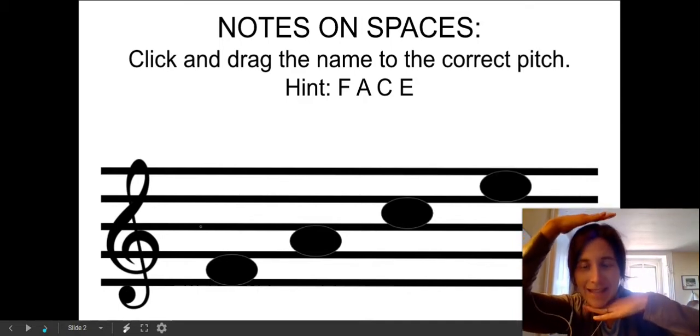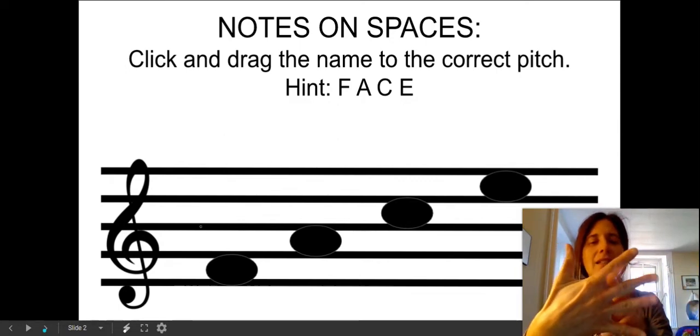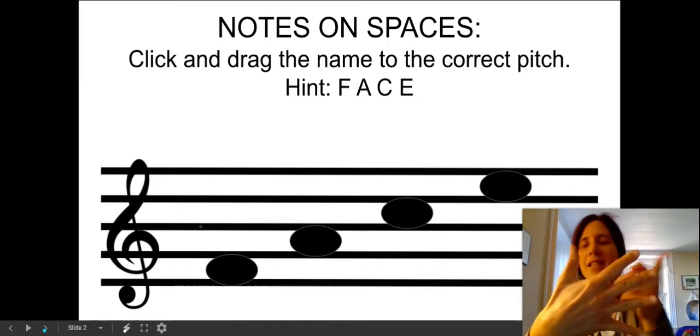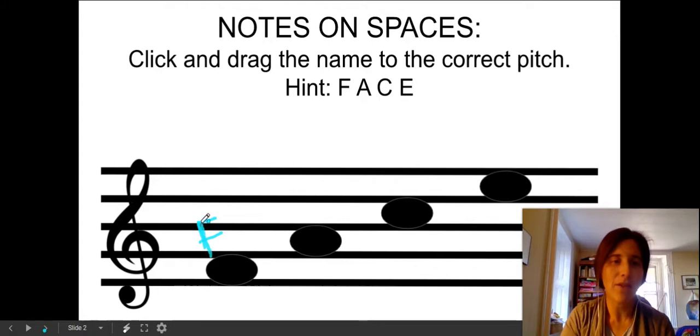Notes on spaces. If your circle note has a line above and a line below, it's on a space. How to remember notes on spaces? Take out your treble clef hand: F-A-C-E, face on a space. So this note is an F, it's on the first space. This one F-A, it's an A on the second space. This note F-A-C is on the third space, and this note F-A-C-E is on the fourth space.